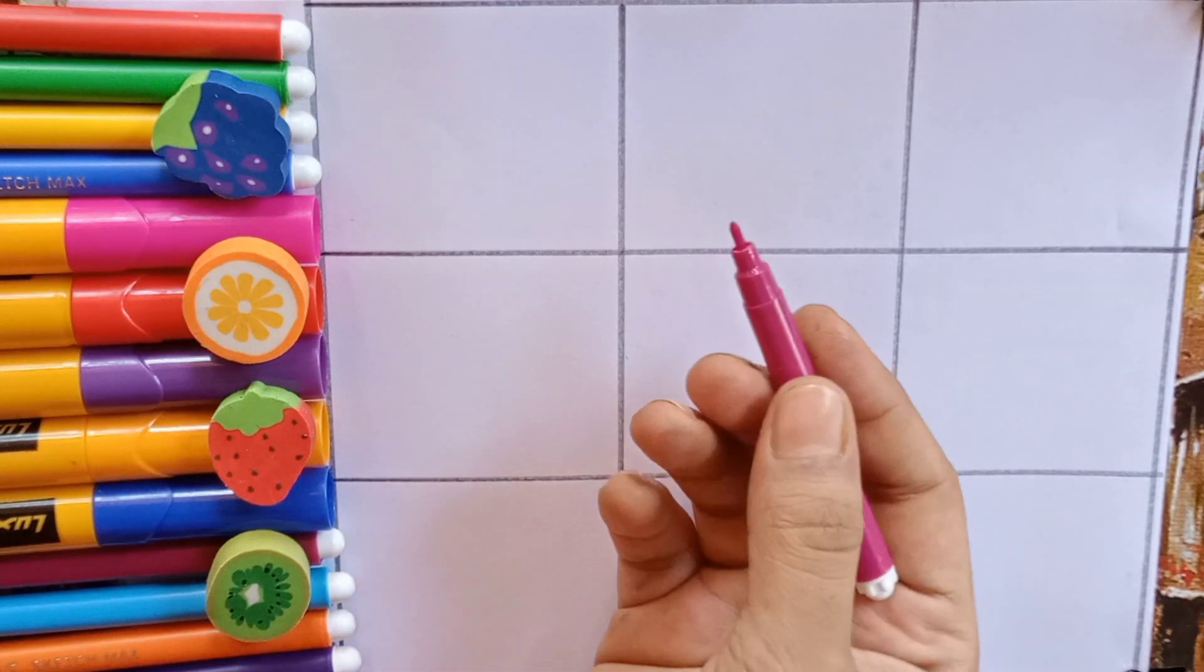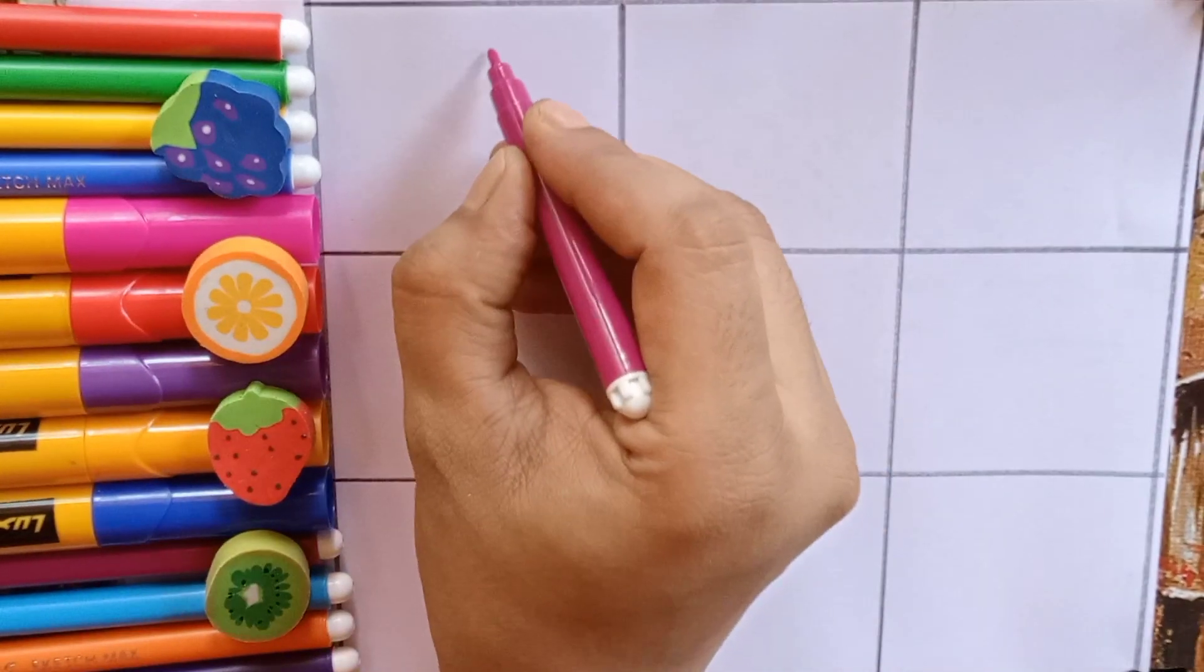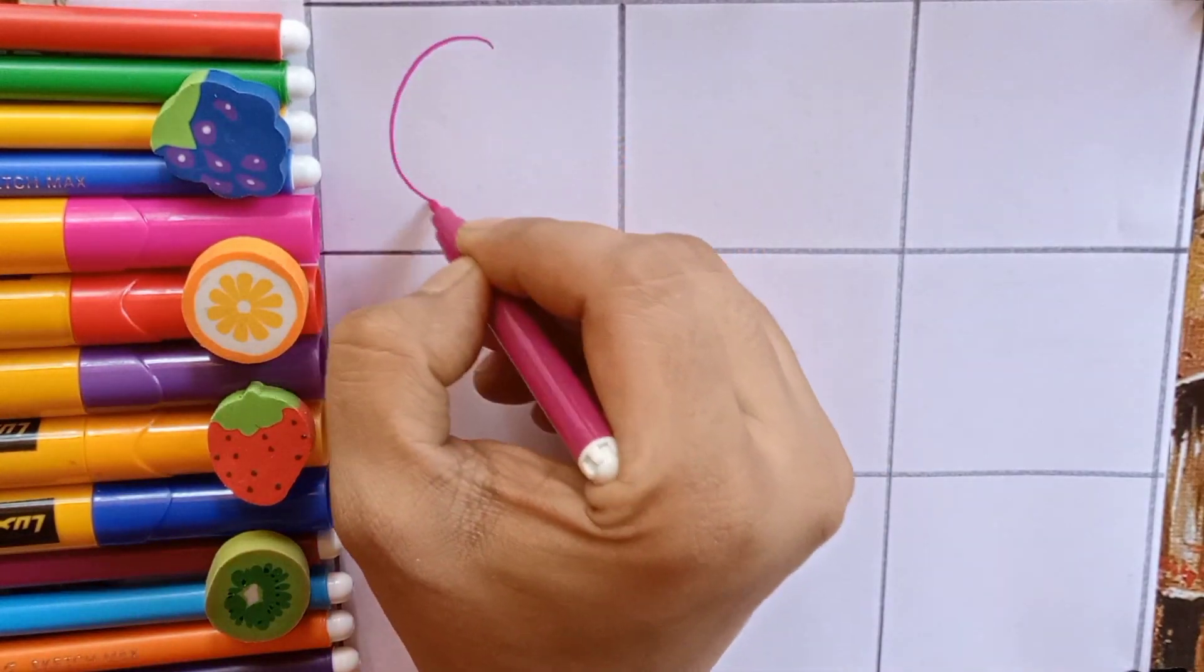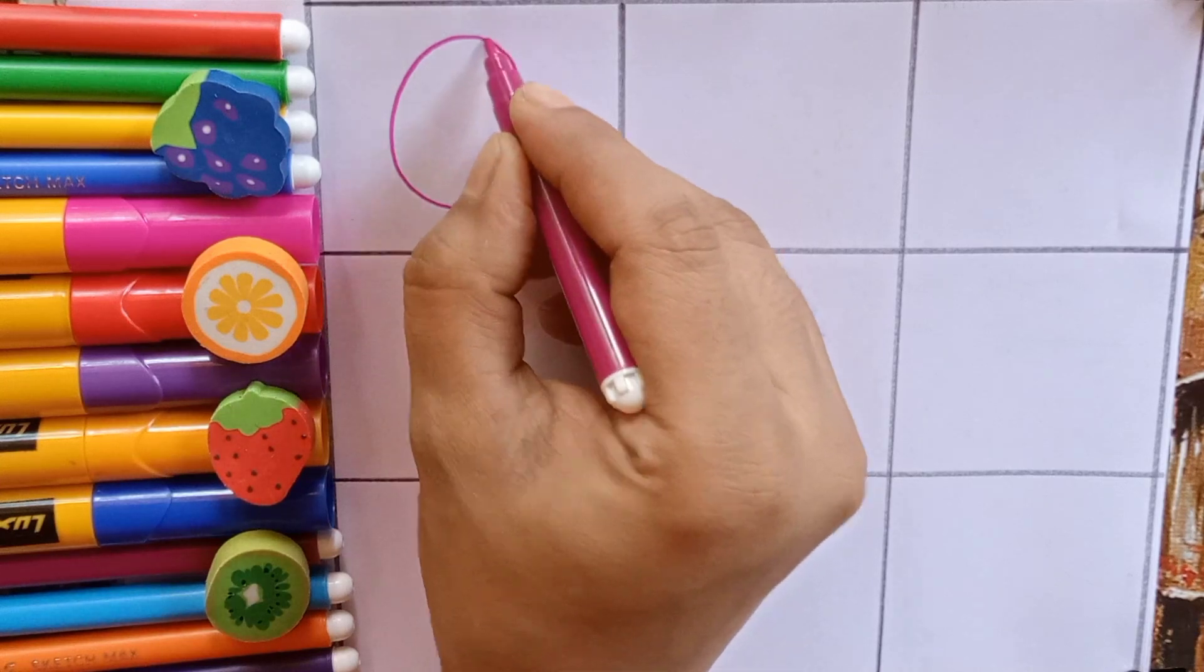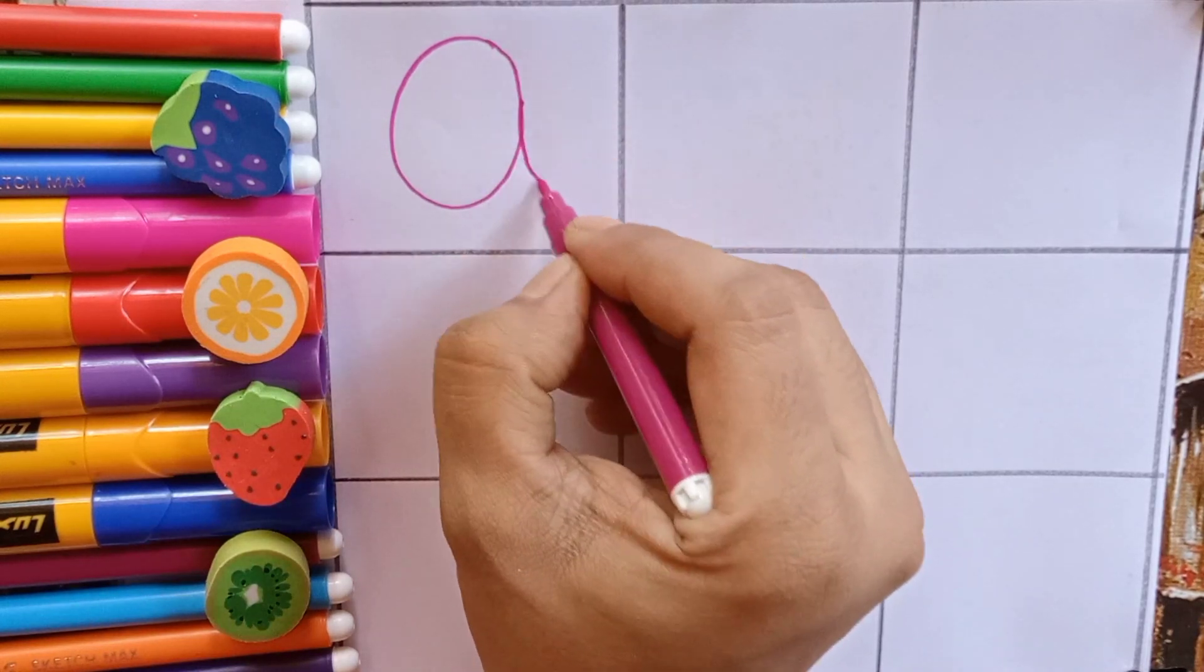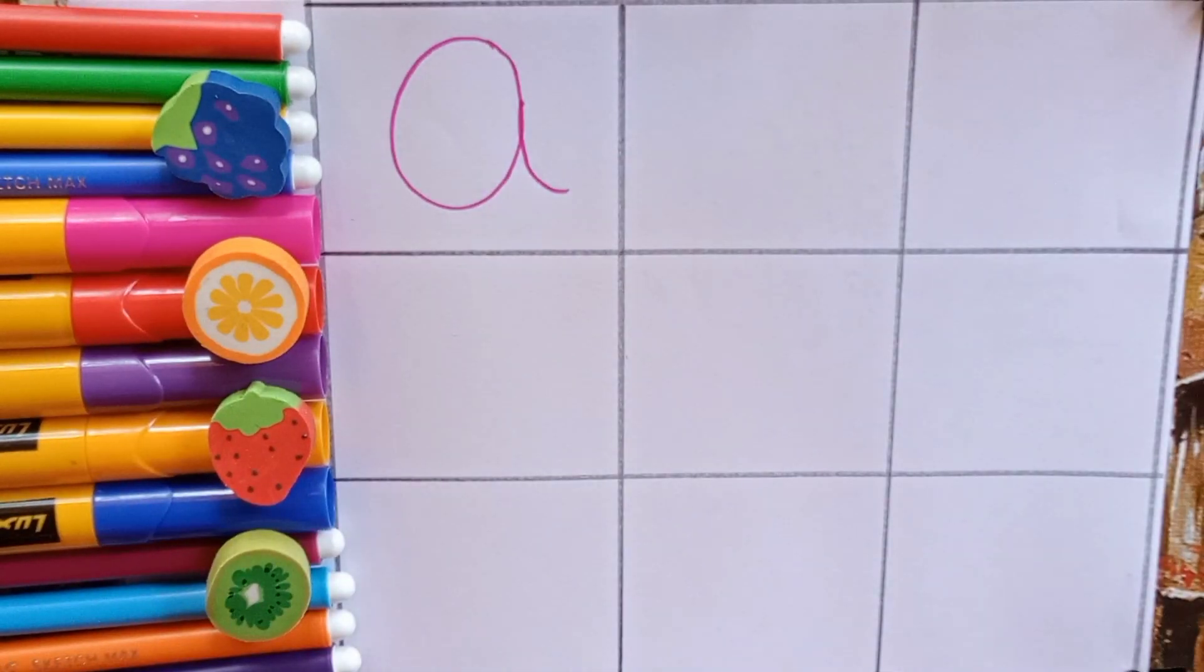Let's learn alphabets. Pink. A. A for armadillo. A for also aeroplane.